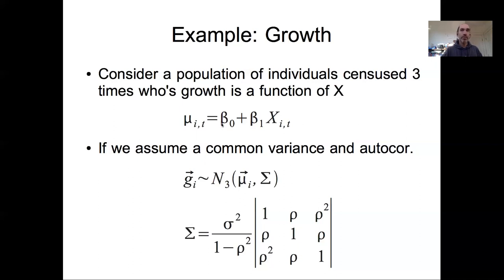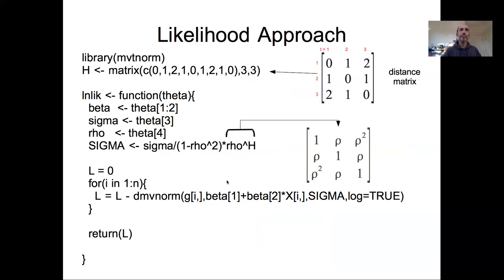So that's our process model and data model. Let's look at how we'd actually implement this, starting with maximum likelihood. The basic approach is to write down our log likelihood function and then use numerical optimization to maximize it. First, I'm loading a library that provides a multivariate normal distribution, because there is no default multivariate normal in R, so we load one from a library.